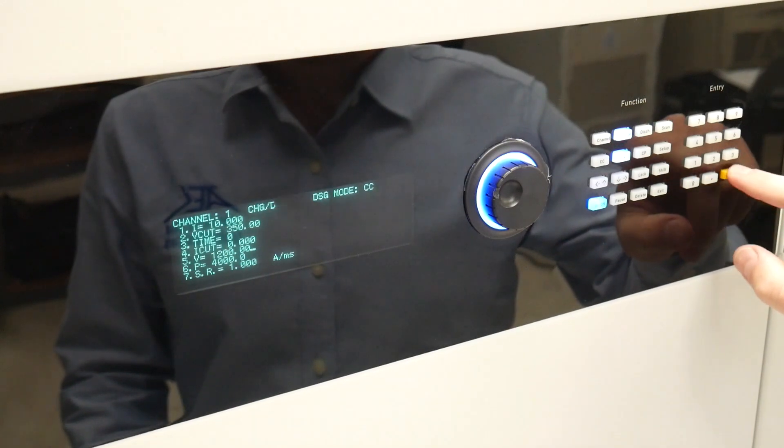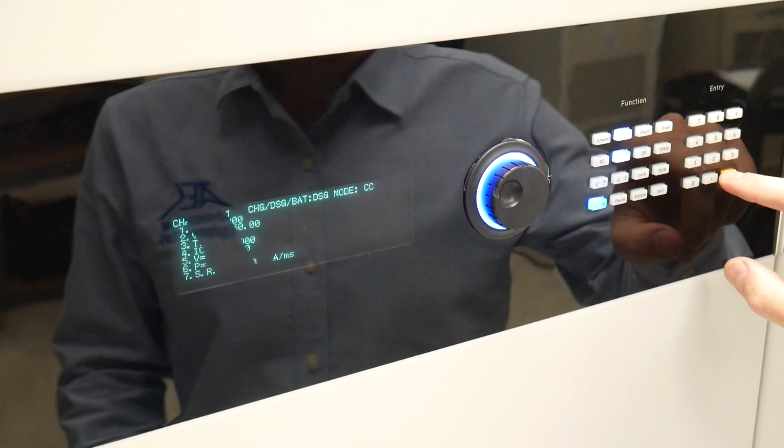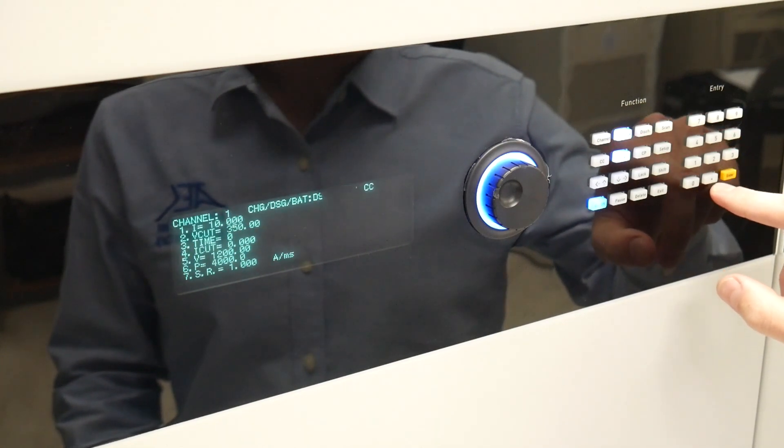Time is left at zero to run indefinitely and we'll have no cutoff current for this demo. And we're running at 1200 volts as well as 4 kilowatts. Lastly slew rate is set to 1 amp per millisecond.